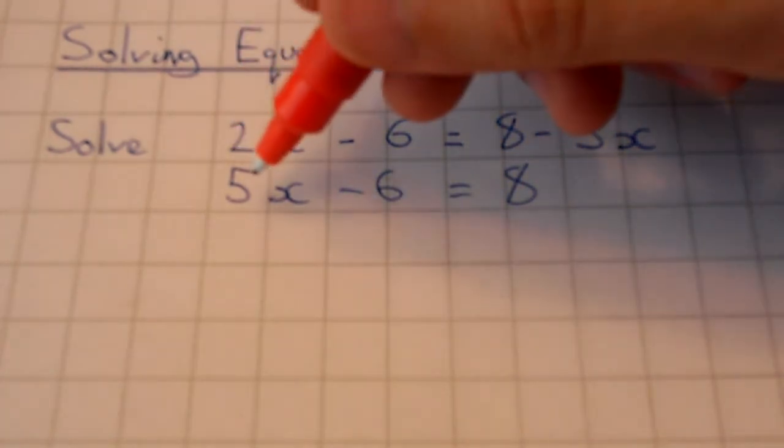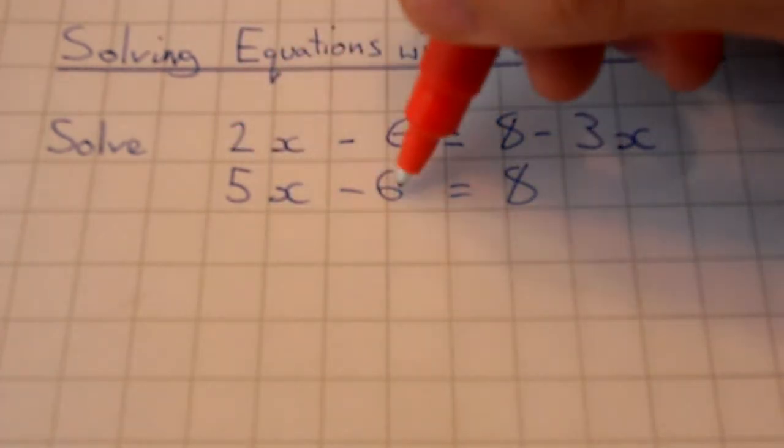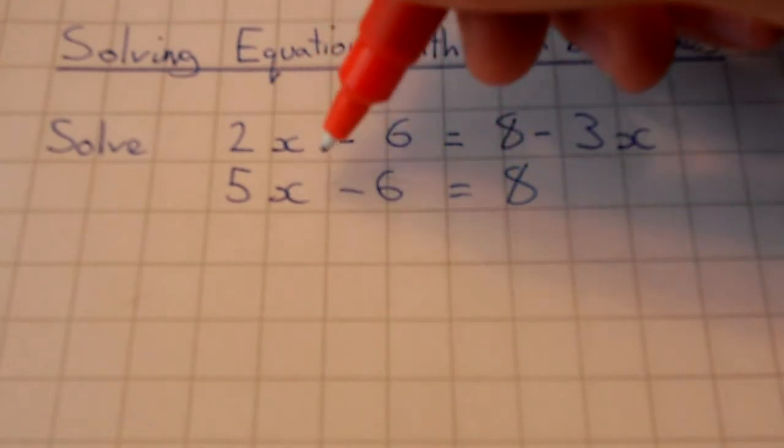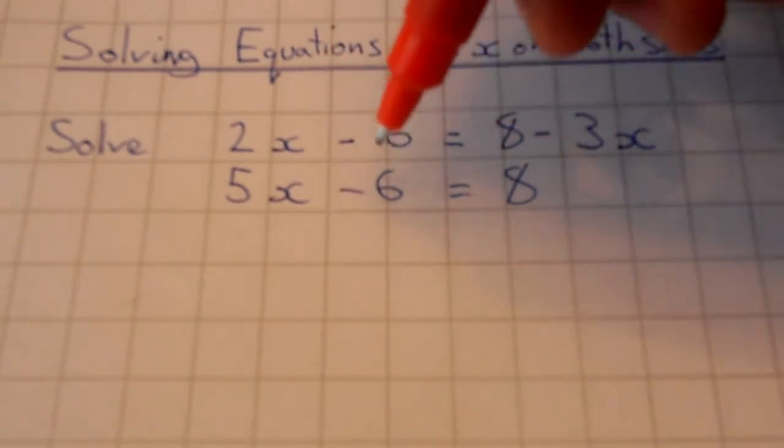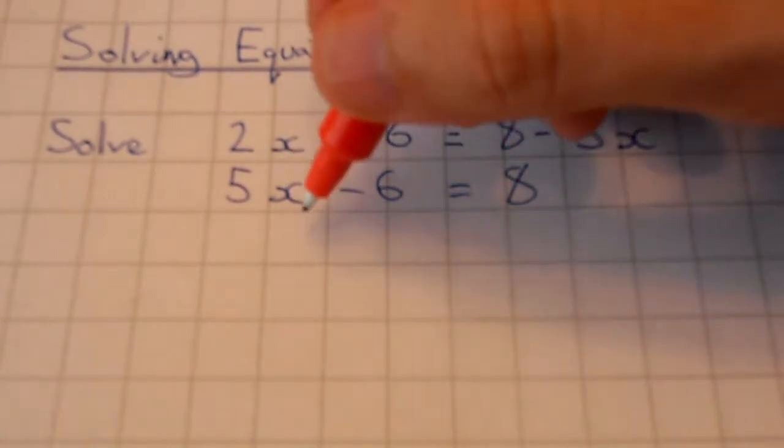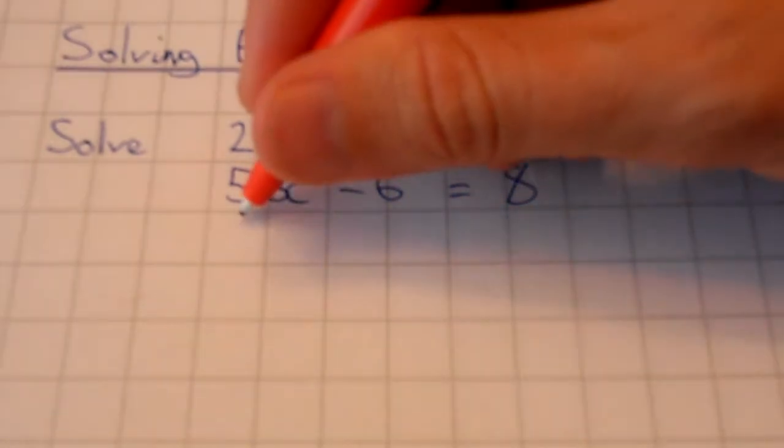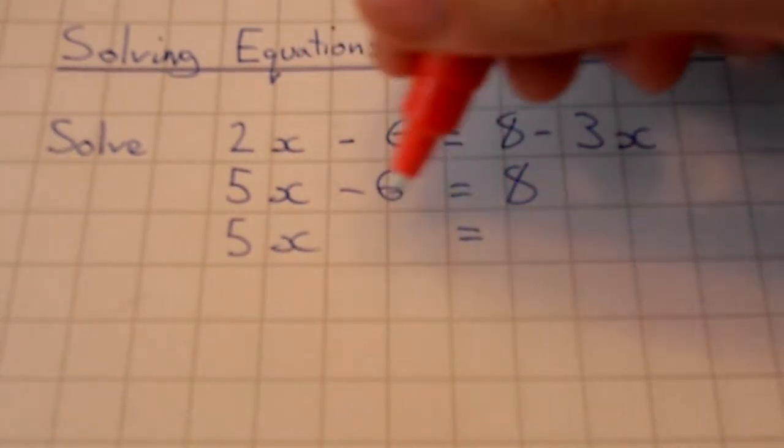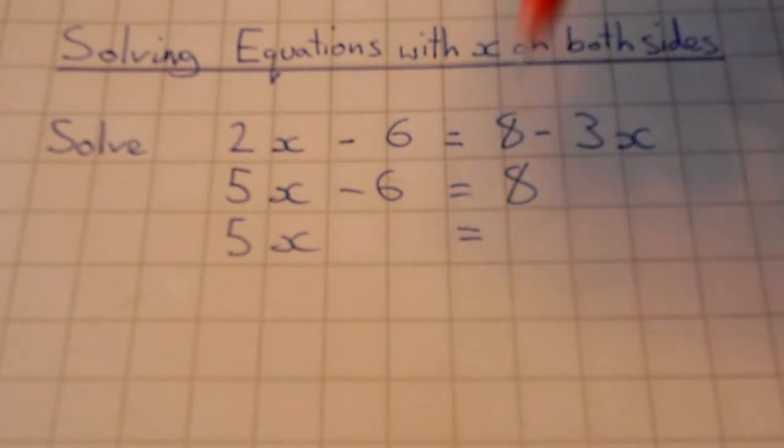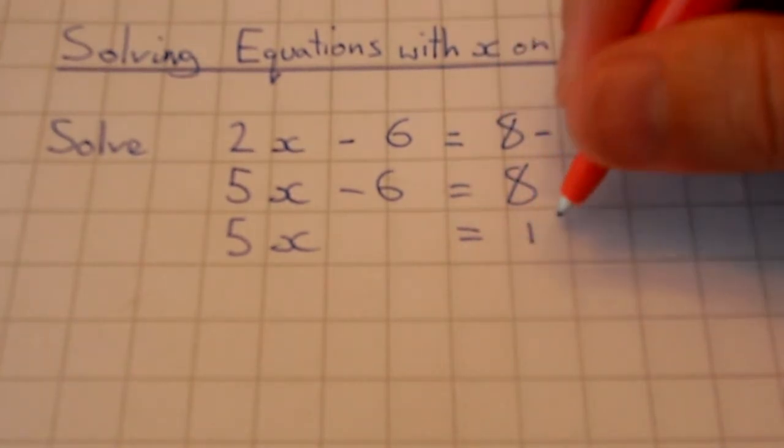I've got all my x's on one side, I need all my numbers on the other side. So what I need to do from here is add on this 6 to both sides, which will leave me with 5x on this side. Add on 6 to both sides. 8 plus 6 will give me 14.